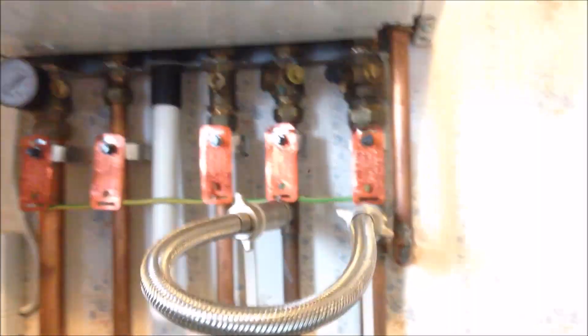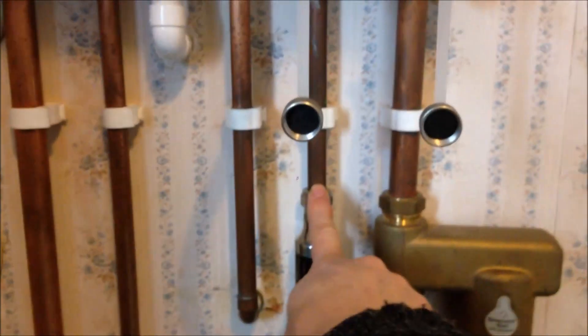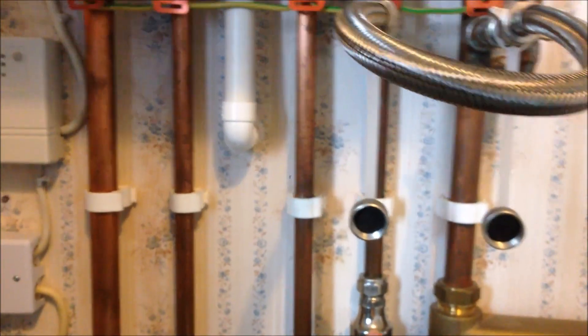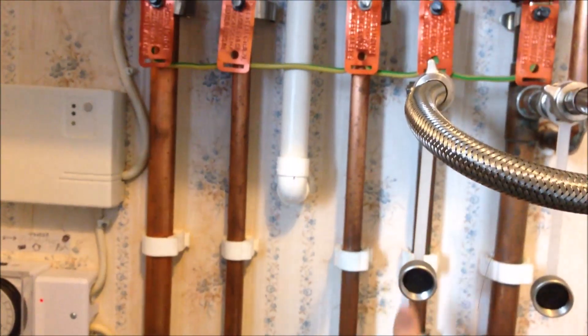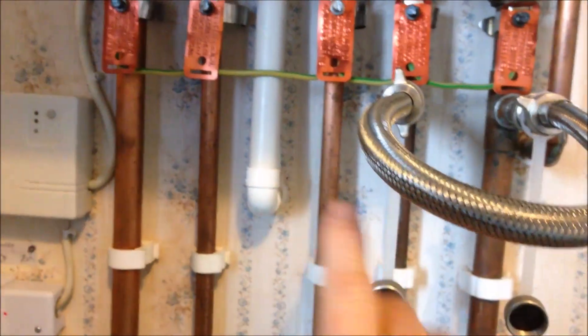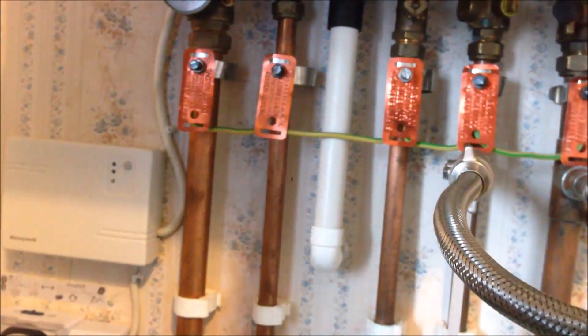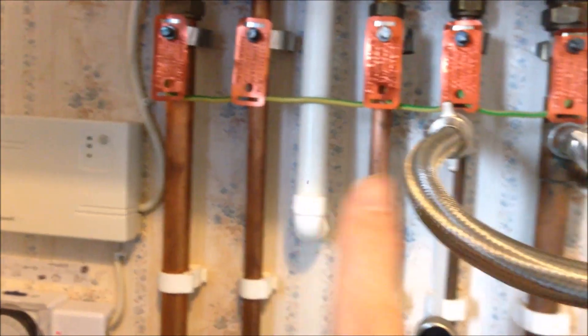So to top up, you can see the loop here. This particular pipe is the incoming water from external. So this is incoming water to the boiler, providing the boiler with cold water, and then the hot water going out from there.